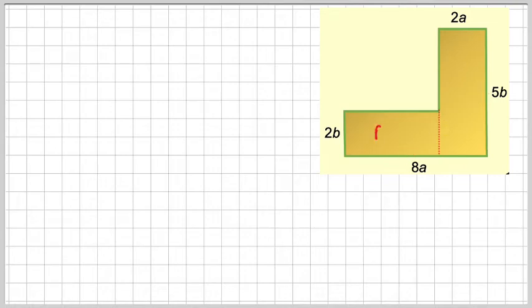So again, we've got two rectangles, which we call A1 and A2. So for A1, we will need to find this length here. So this length here is 8a. And if we take away 2a, that will give me this length here, which will give me 6a. So A1 will be 6a times 2b.